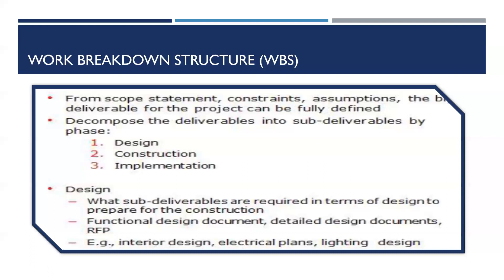For electrical plans, if you break it down further, you might specify how many lights, how many switches, how many outlets, and what voltage — whether appliances are 110 or 220 volts. For lighting design, you specify details such as whether you want a chandelier, or whether the lamp should emit warm or daylight — these are your sub-deliverables in the WBS.